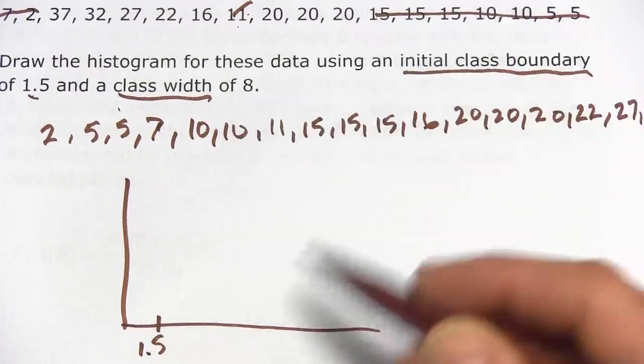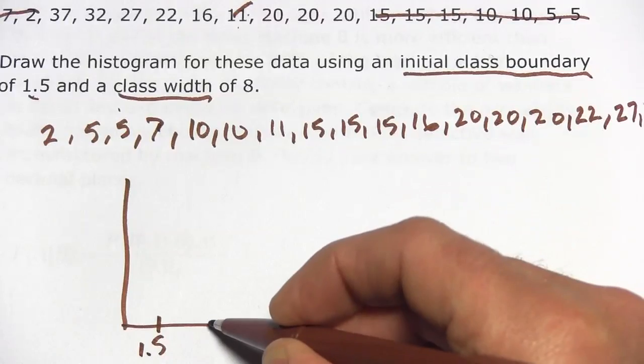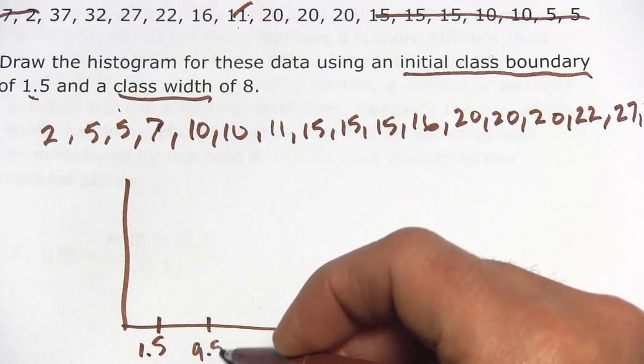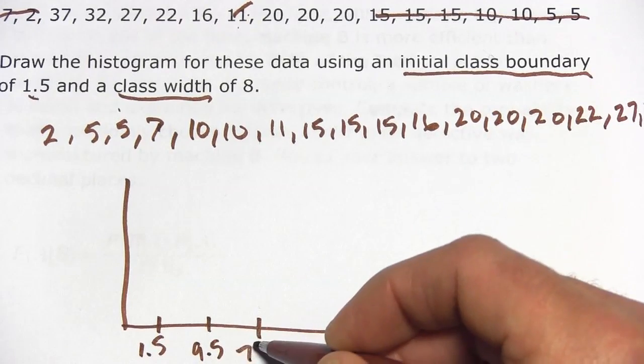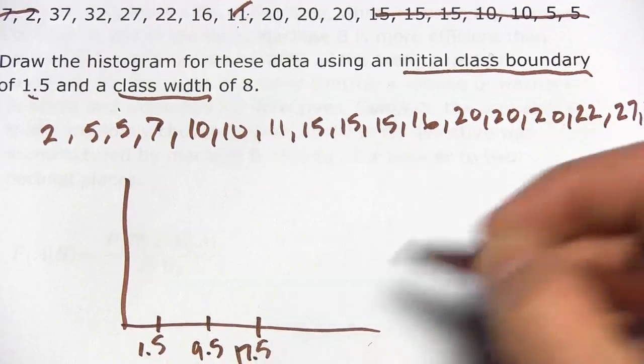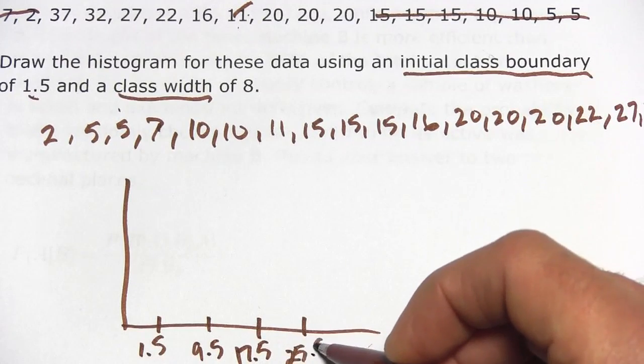And it says the class width is 8. So we're going to go 8 over, so 1.5 plus 8 would be 9.5. And then we go over 8 more for the next class. That's going to be 17.5. 8 more would be the next class. That's 25.5.